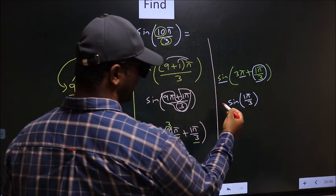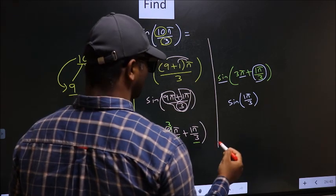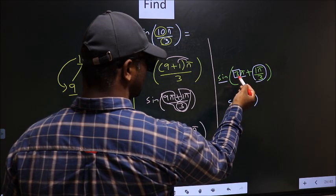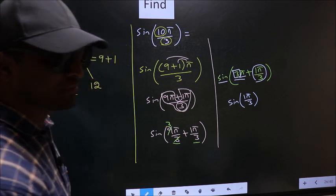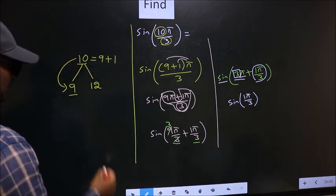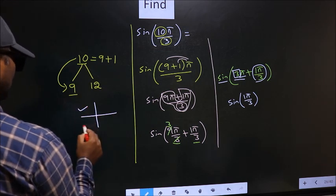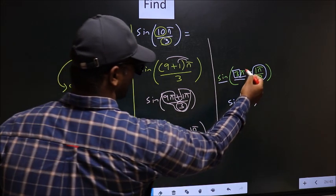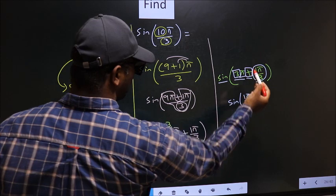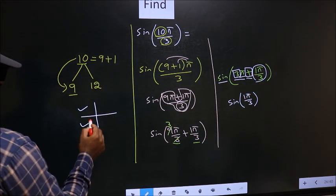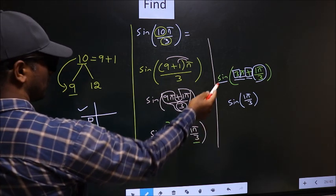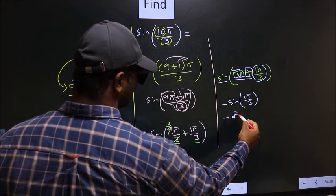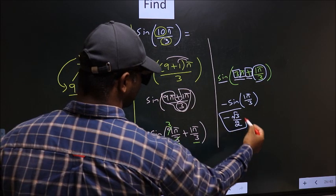Now the question arises, will we get here positive or negative? To answer that, you look at this number. Here we have 3, which is odd. For every odd multiple of π, the angle will lie either in the second or in the third quadrant. Now to decide in which quadrant does it lie, you should look at this symbol. Here we have plus. That means the angle lies in the third quadrant. And in the third quadrant, sine is negative. So put negative. So it is negative sin π by 3, which is root 3 by 2. So this is our answer.